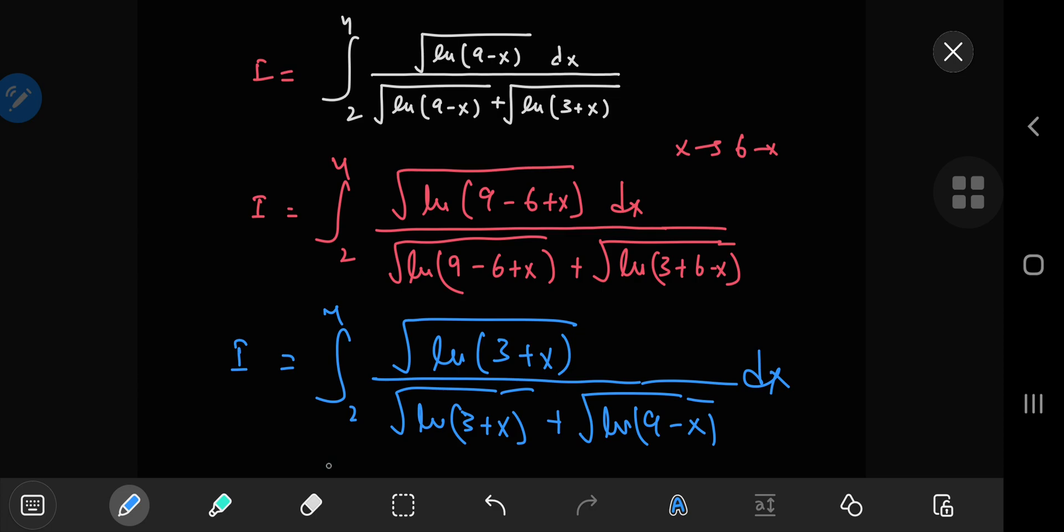So this integral in blue and the integral in white represent exactly the same integral. So I can just add them up, and that will give me 2 times i. But notice one thing very useful here: the denominators in both cases are exactly the same. So you have a common denominator if you combine the integrals, and because of the common denominator, you have something useful in the numerator as well.